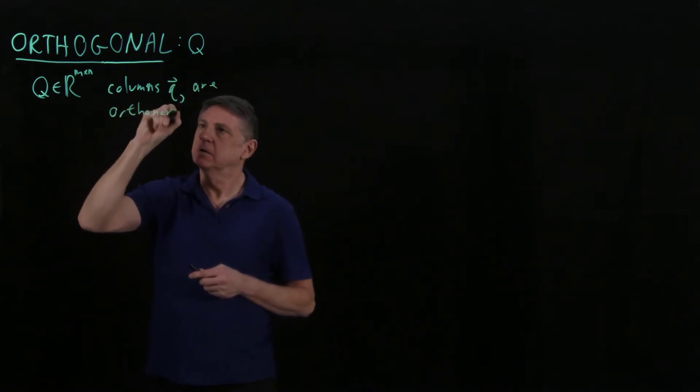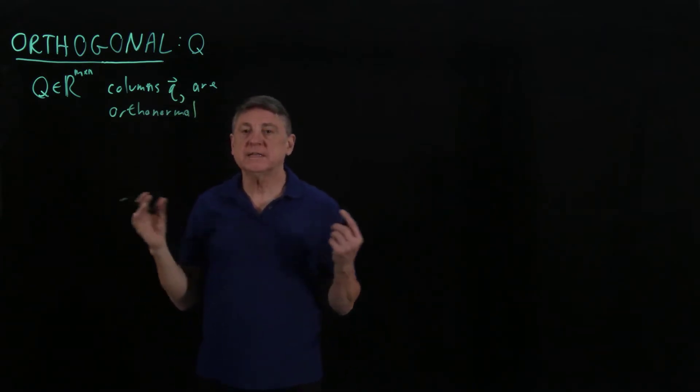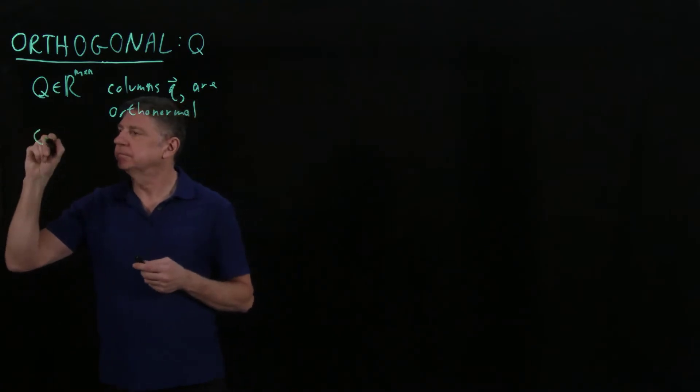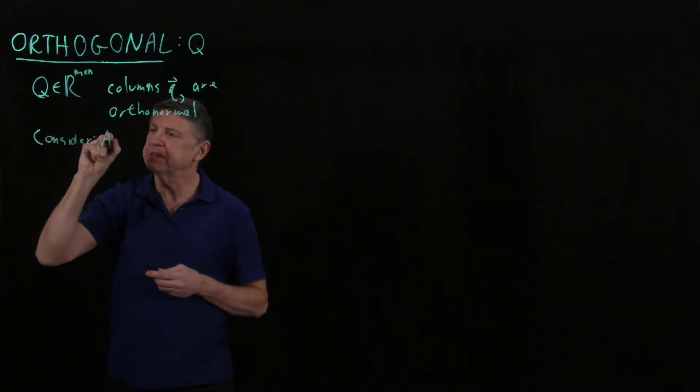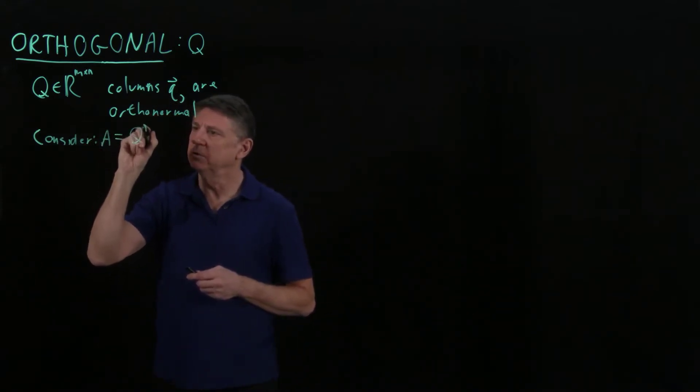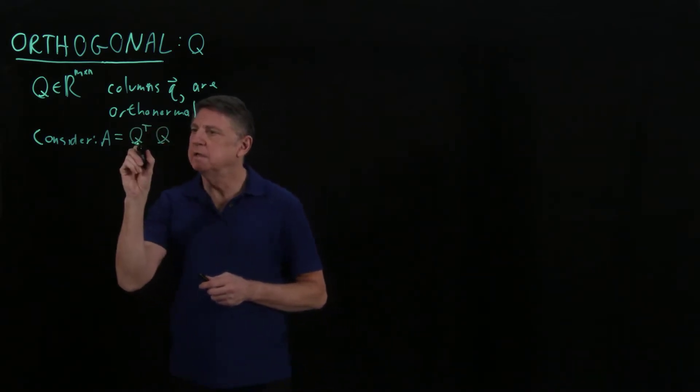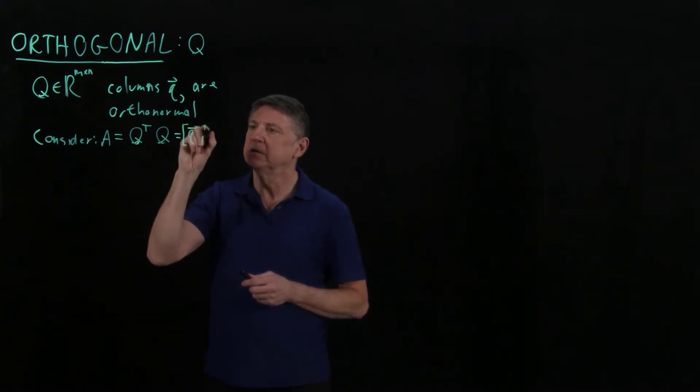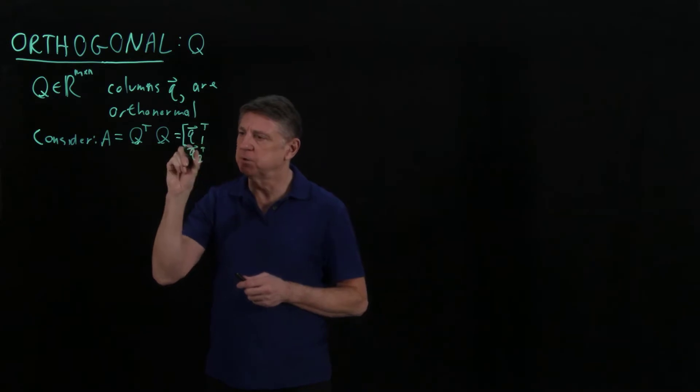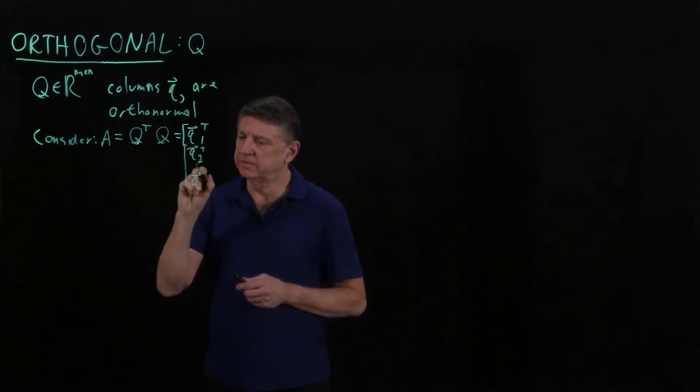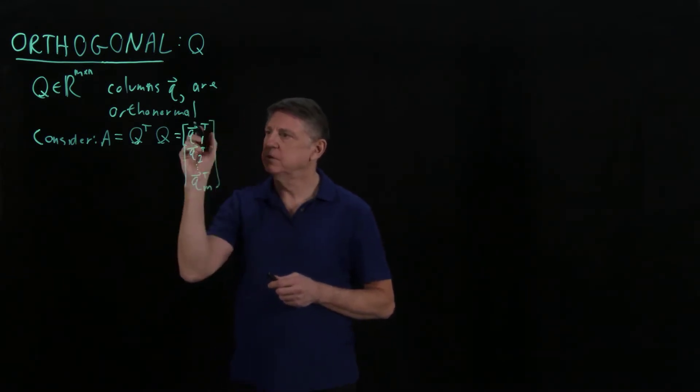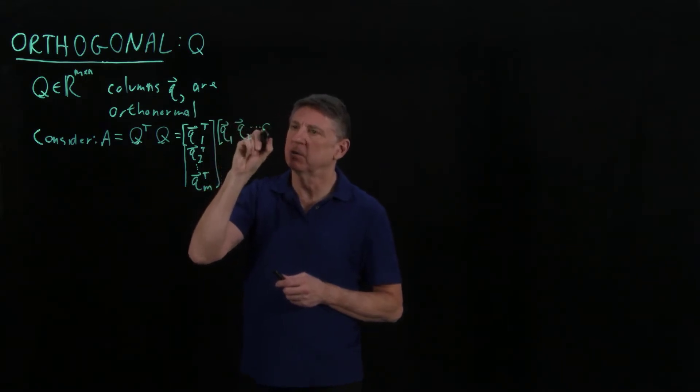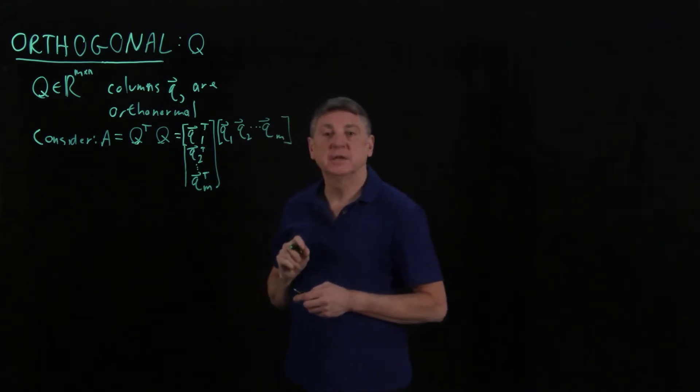If we have this property, let's suppose that we try to write a matrix as Q times Q transpose. So let's consider some matrix A that we are writing as Q transpose times Q. We can expand that using block partitioning, as we can think of this as Q1 transposed, Q2 transposed, and so on until we have transposed all of the vectors. That will be multiplied by the Q1 vector, the Q2 vector, and so on, until we've represented all of the vectors that are in the matrix.